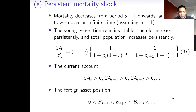To summarize: fertility affects both investment and saving, but the effect on investment dominates, while mortality only affects saving. The effects of temporary, permanent, and persistent fertility shocks differ from each other. For temporary fertility shocks, the initial pattern of capital flows is reversed later on.